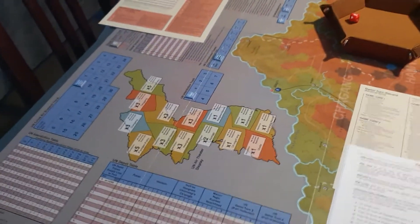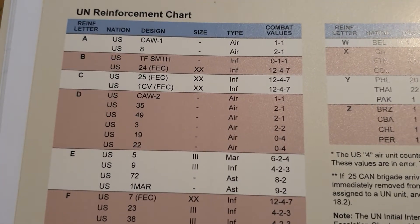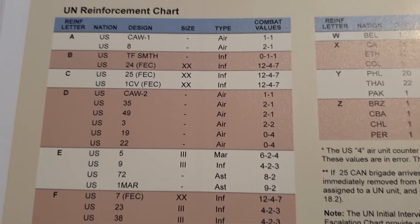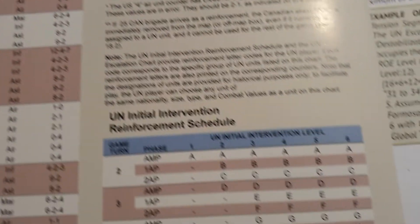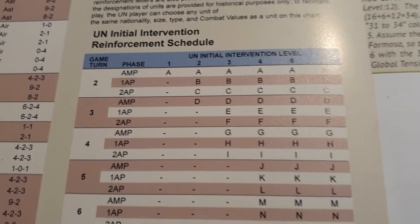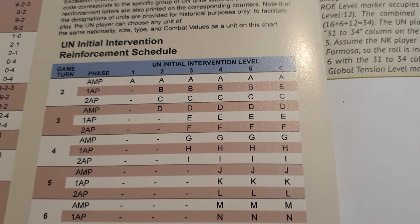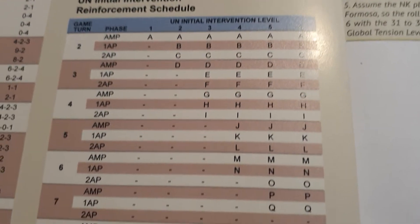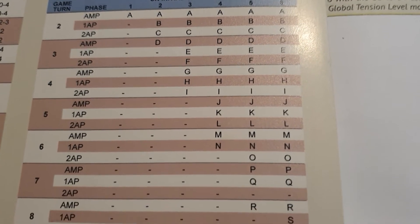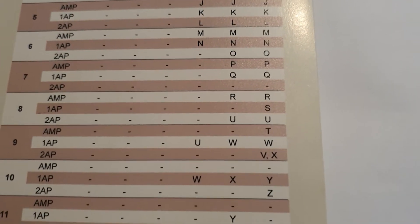This determines how many units you get and how quickly you get them in terms of reinforcement. If you look at the UN reinforcement chart, you can see these letters and the units associated with each letter. If you go across to the initial reinforcement schedule, you can see the game turns down the left side, and your initial intervention level. The higher your intervention level, the quicker you get units, and the more units you get.